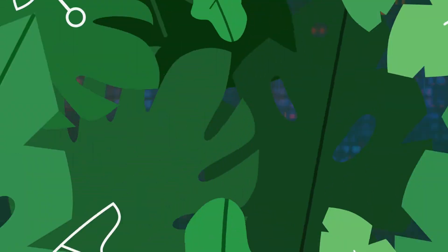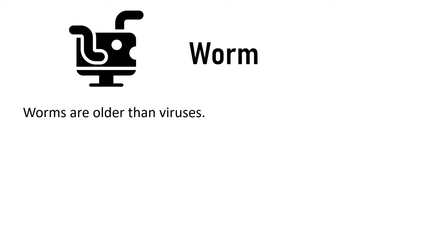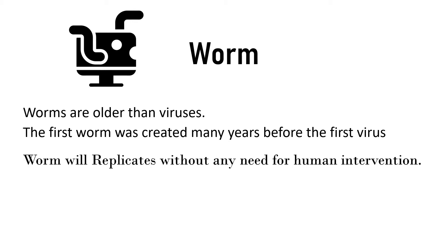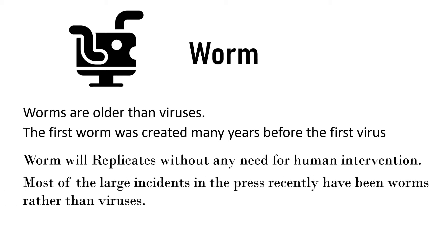The second type is worms. Worms are older than viruses — the first worm was created many years before the first virus, and made use of a flaw in the Unix finger command to quickly bring down most of the internet. A worm is a program that, after it has been started, replicates without any need for human intervention. It will propagate from host to host, taking advantage of an unprotected service or services, and traverse a network without the need for a user to send an infected file or email. Most of the large incidents in the press recently have been worms rather than viruses.